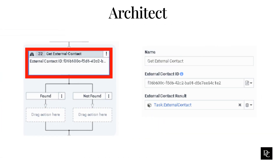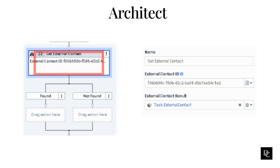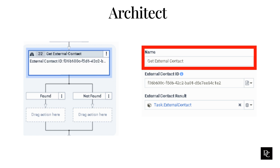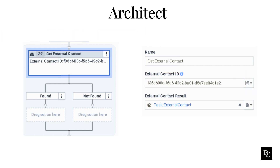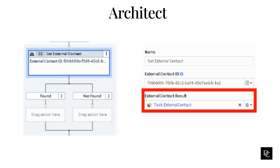For the Get External Contact action, after adding it from the toolbox, the developer will type a name for the action — the label you enter here becomes the action's name displayed in the task sequence. Enter a literal value or expression in the External Contact ID field. Architect creates a variable for use with the External Contact Result field. You can find the External Contact ID by going to the External Contact in the Admin panel and copying the 32 alphanumeric IDs and pasting it in the External Contact ID field. Type a name for the variable to store the external contact found in this action; you can reference this variable in the rest of the flow.